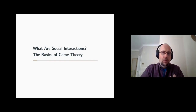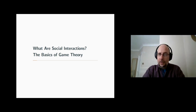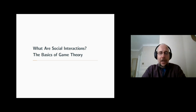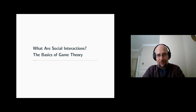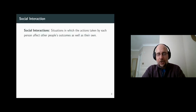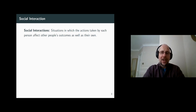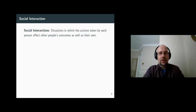So far, we were modeling behavior based on people's own utility function and their own feasibility constraints. However, in the real world, people's actions affect both your utility and your constraints. So social interactions are exactly those situations in which actions by others affect the outcomes of your own optimization process.